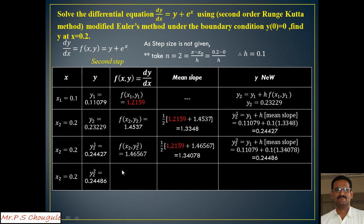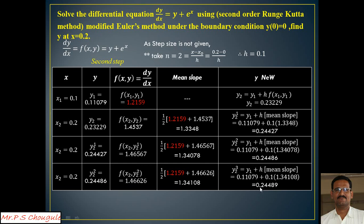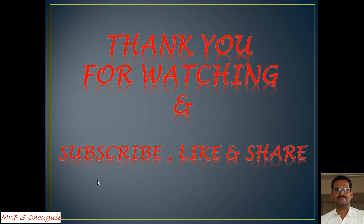Using y2=0.24486, the function at these two points is 1.46626. The mean slope using the first slope and this current slope gives 1.34108, and the corrector formula yields y2 = 0.24489. Comparing 0.24486 and 0.24489, they are nearly equal, so we conclude that at x2=0.2, the best approximate value of y2 = 0.2448. Thank you for watching — please subscribe, like, and share.